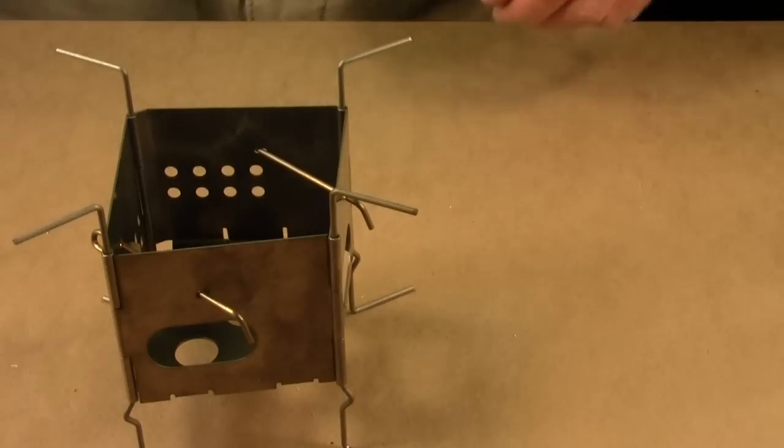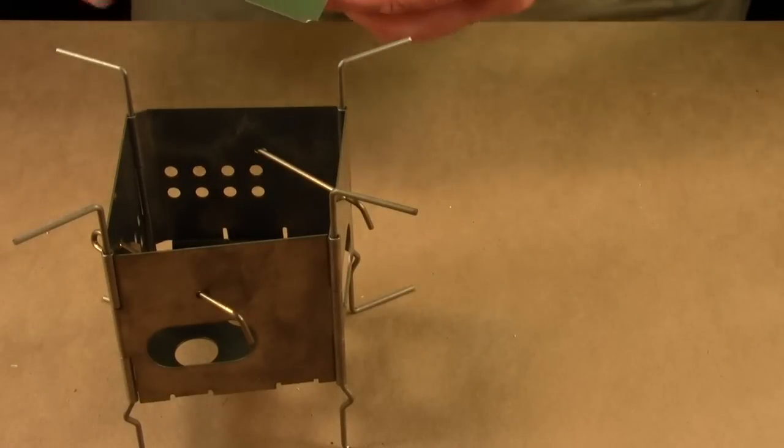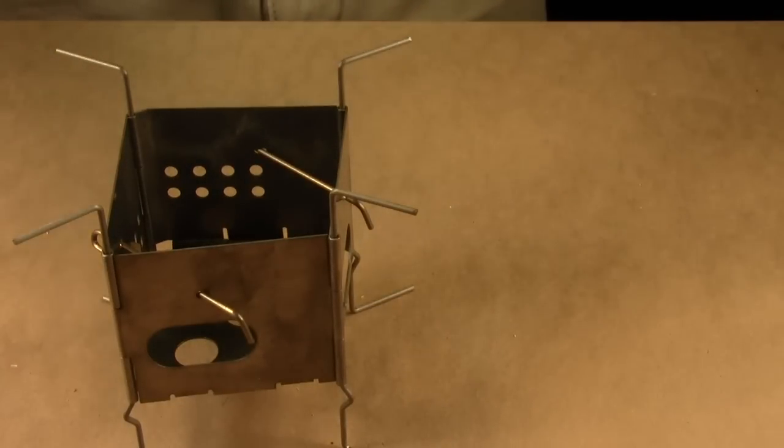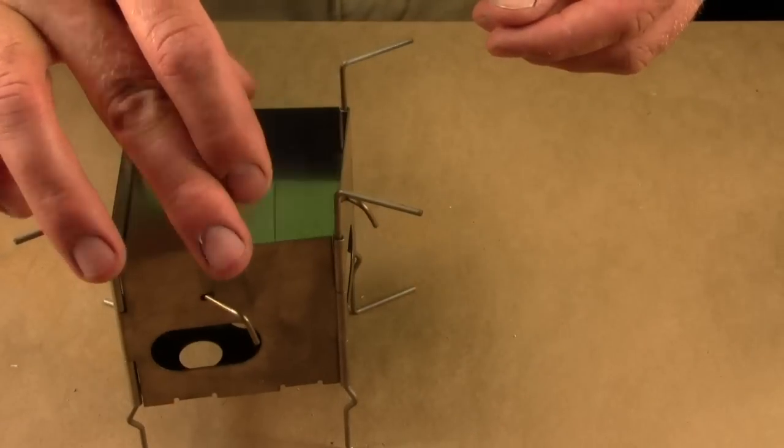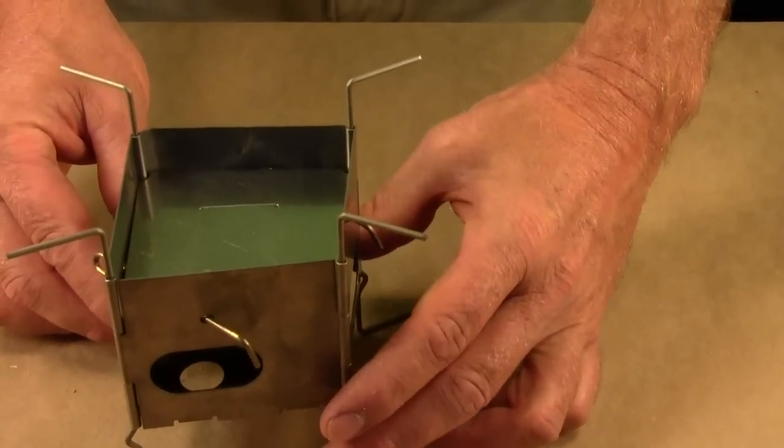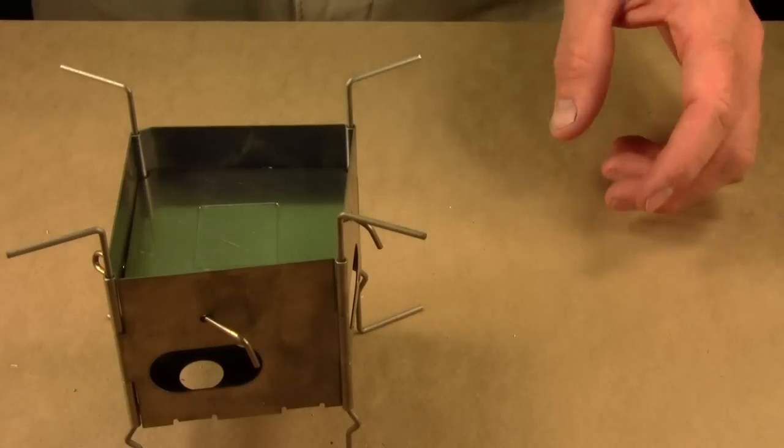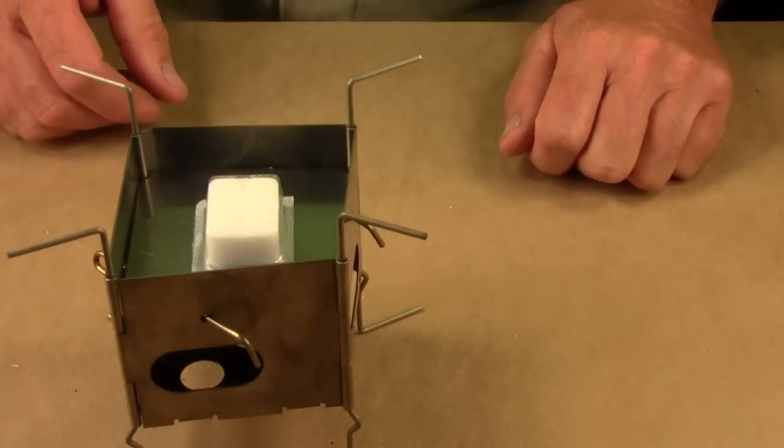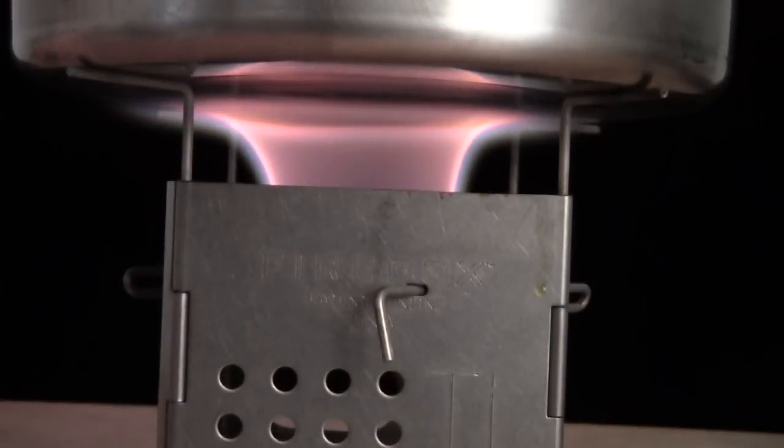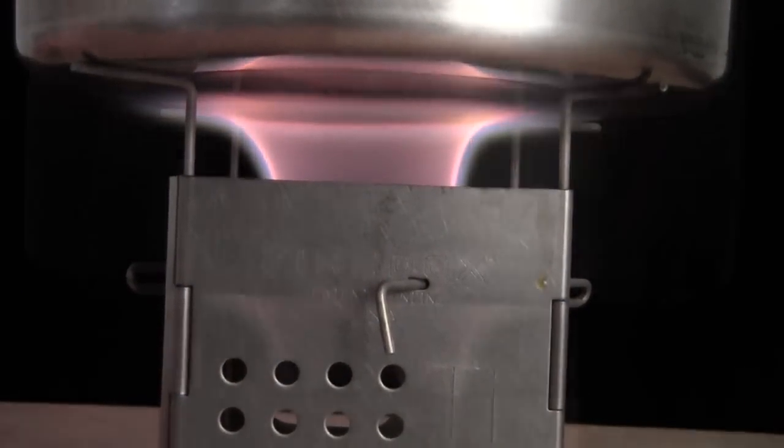The other uses for those Nano sticks is to support the optional fuel plate. So if you wanted to burn an Esbit tablet or something, you can drop that fuel plate down. And that creates the right height for using an Esbit tablet.